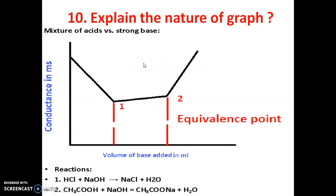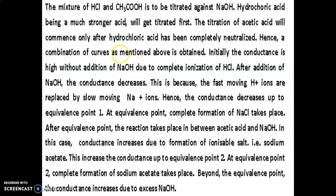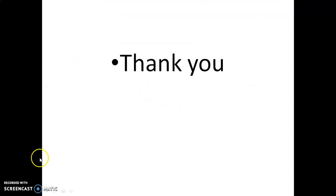Generally, the conductance is directly proportional to the speed of the ions and the nature of the electrolyte. Strong electrolytes have high conductance, while acetic acid is a weak electrolyte. This is the nature of the graph. Thank you.